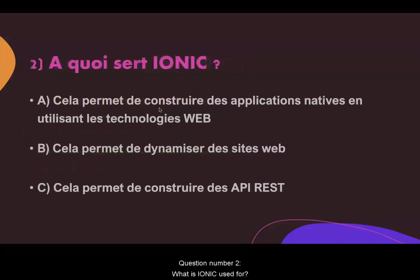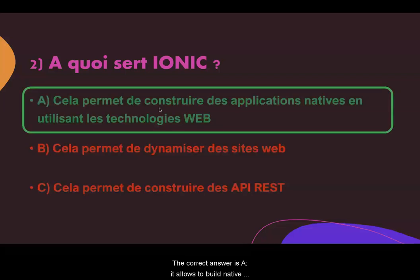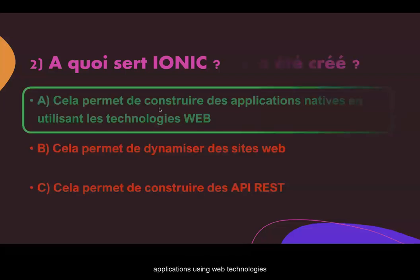Question two. What is Ionic used for? Answer A: it allows to build native applications using web technologies. Answer B: it allows to dynamize a website. Answer C: it allows to build REST APIs. The correct answer is A, it allows to build native applications using web technologies.